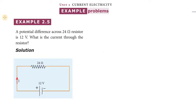Hi students, greetings from SUD Deutschland Academy. Physics unit two, current electricity, example problem. The problem: a potential difference across a 24 ohm resistor is 12 volts. What is the current through the resistor?